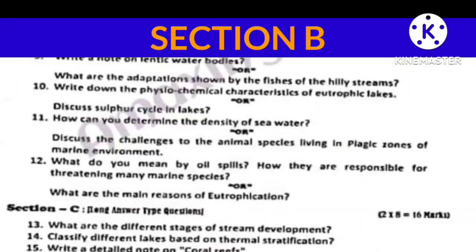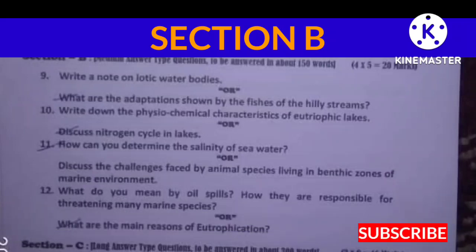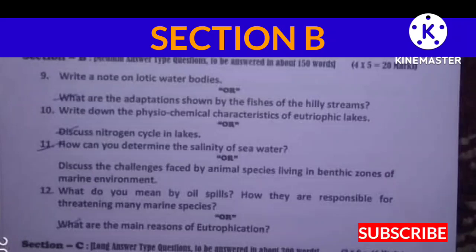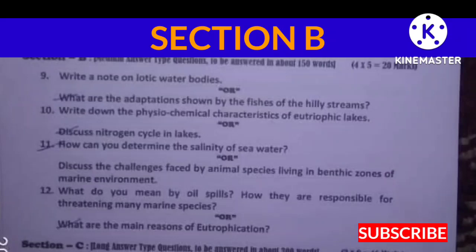Section B continued: Write a short note on lotic water bodies. Write down the physico-chemical characteristics of eutrophic lakes, or discuss the nitrogen cycle in lakes. Question number eleven — how can you determine the salinity of seawater, or discuss the challenges faced by animal species living in the benthic zones of the marine environment? What do you mean by oil spills — how are they responsible for threatening many marine species, or what are the main reasons of eutrophication?